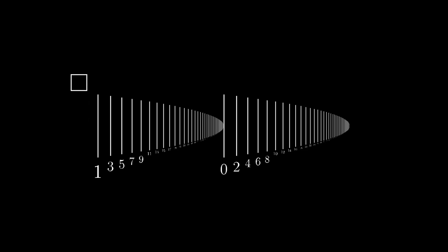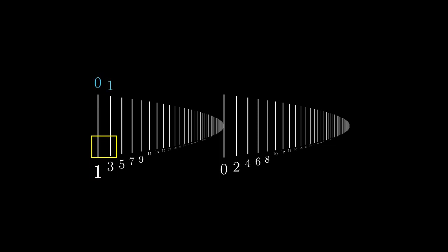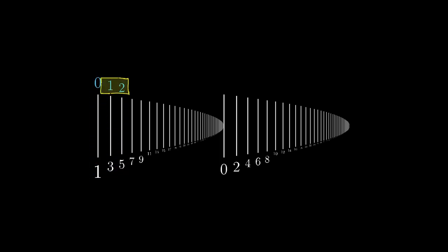The empty initial segment is transformed into the empty set, 0. Then the initial segment containing the first element is transformed into a set containing 0, that is 1. The next initial segment leads to 2, the next to 3, and so on.